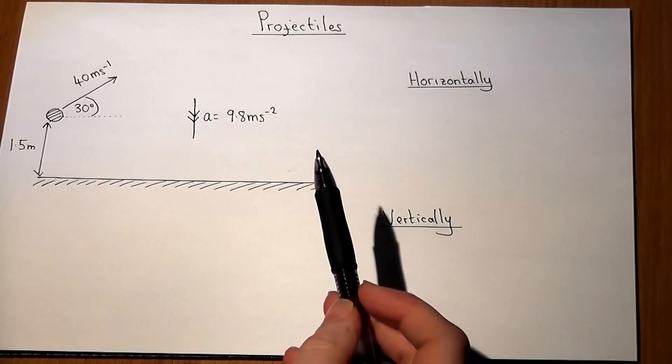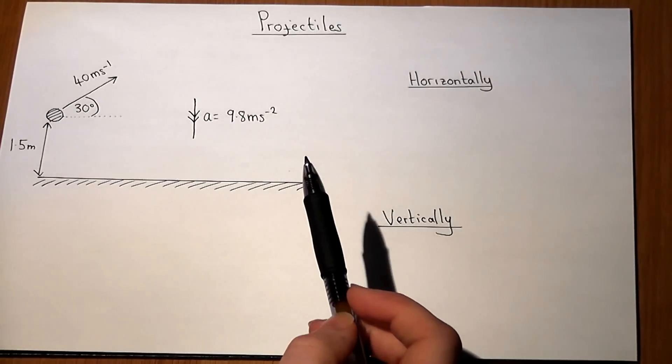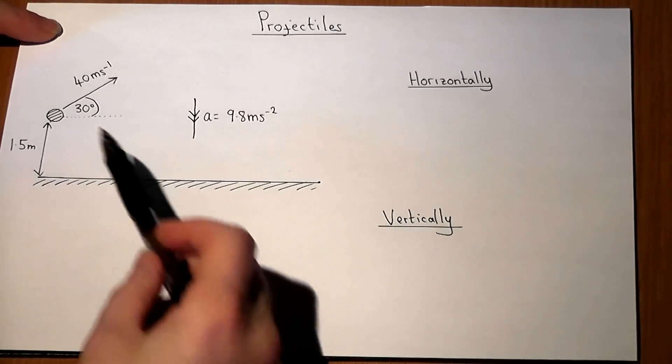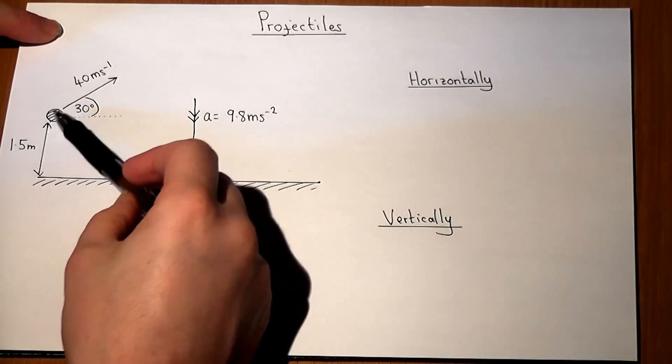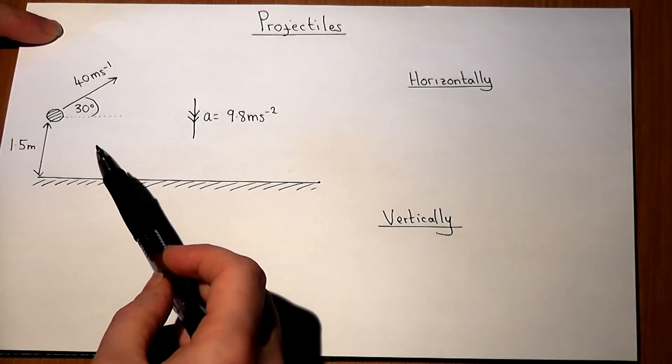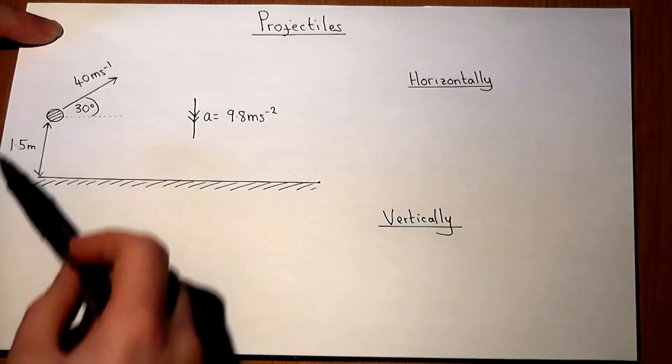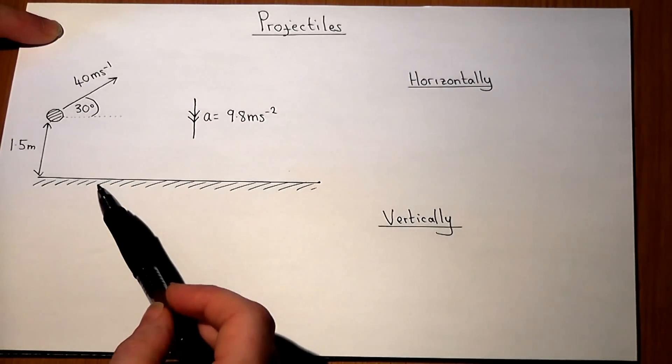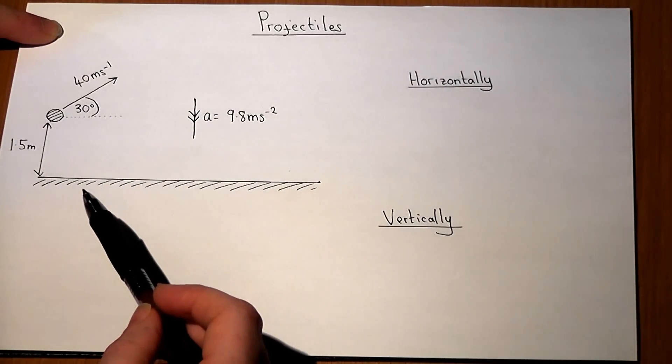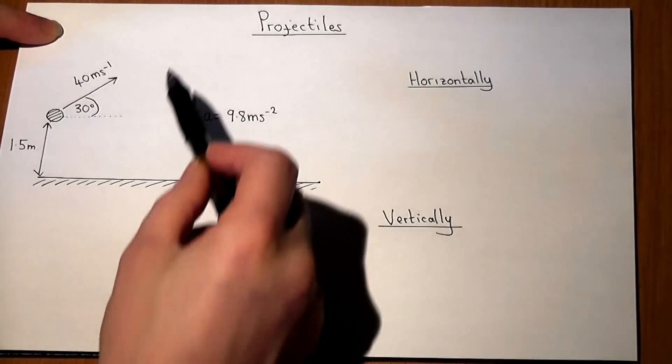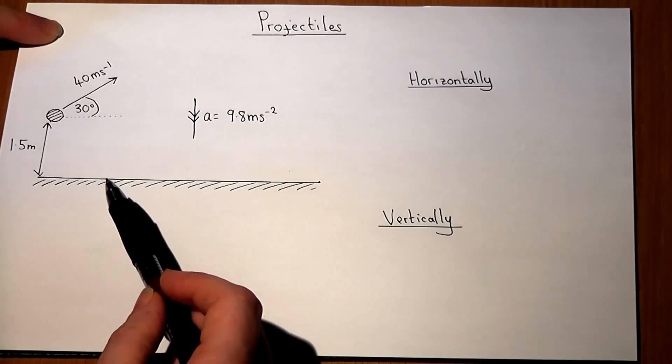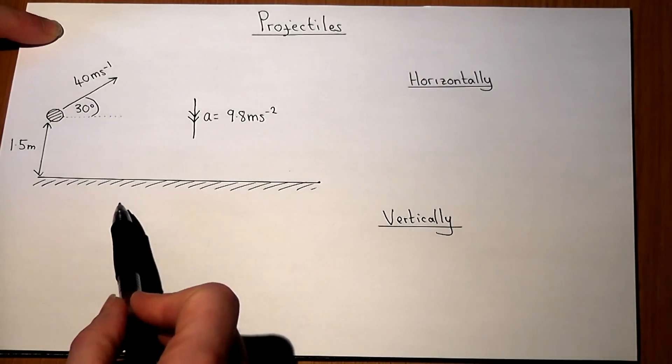This video looks at the key skills required to answer projectile questions. We've got a ball being thrown at an angle of 30 degrees from a height of 1.5 meters with an initial speed of 40 meters per second. Acceleration is acting downwards which we'll take to equal 9.8 downwards, and we'll assume that there's no air resistance which means there's no horizontal acceleration.